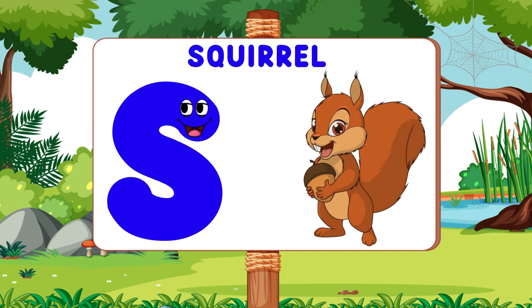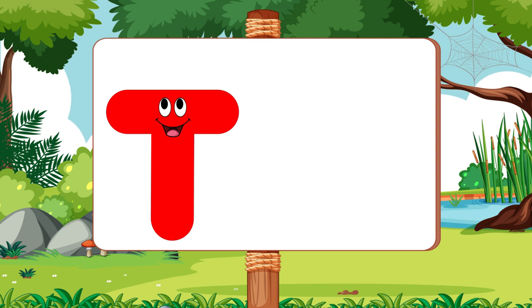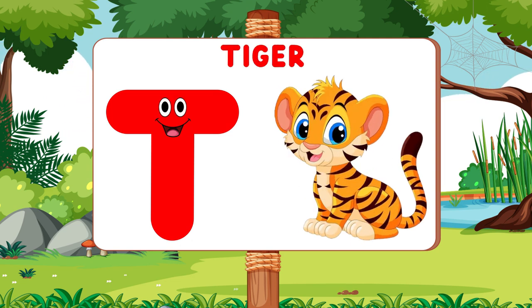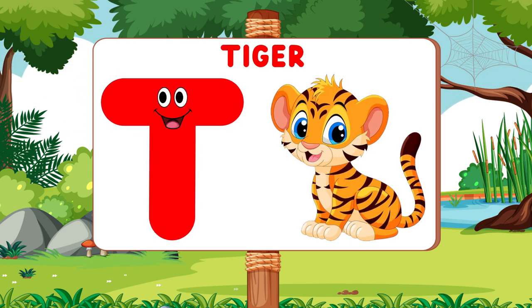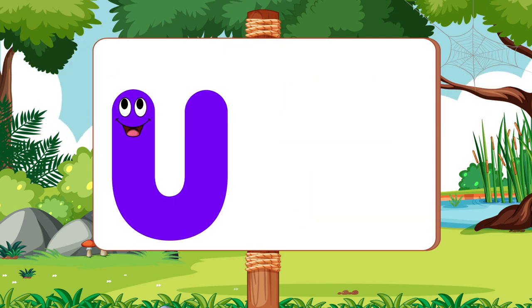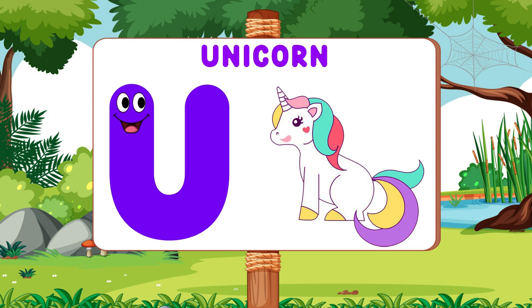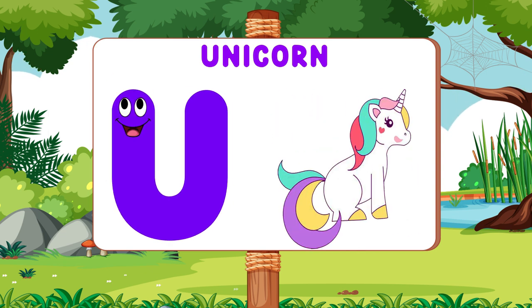S is for Squirrel. S, S. Squirrel. T is for Tiger. T, T. Tiger. U is for Unicorn. U, U. Unicorn.